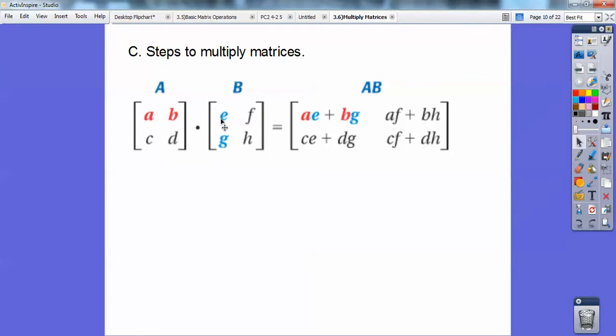A times E, plus this number times this number, B times G. So I go first times first plus second times second. So this is my first row, this is my first column right here. So that's what this stuff says right here. And then for the upper right number over here, it's going to be A times F plus B times H, okay?